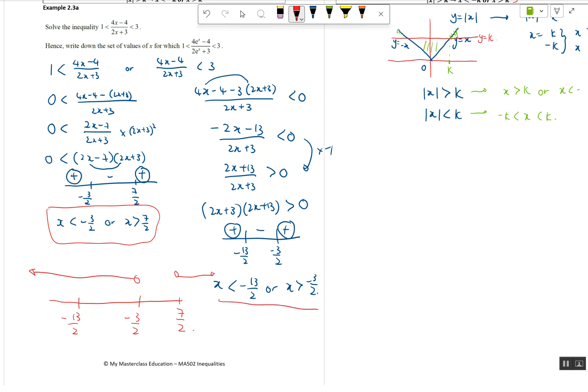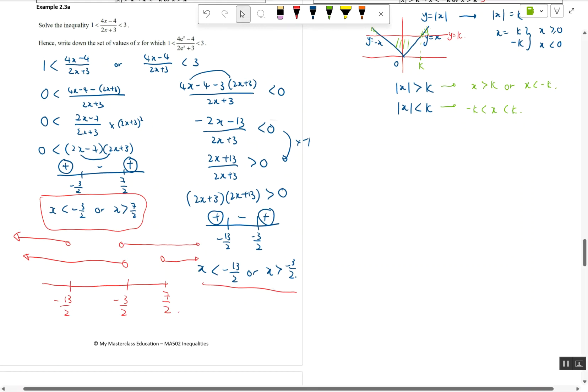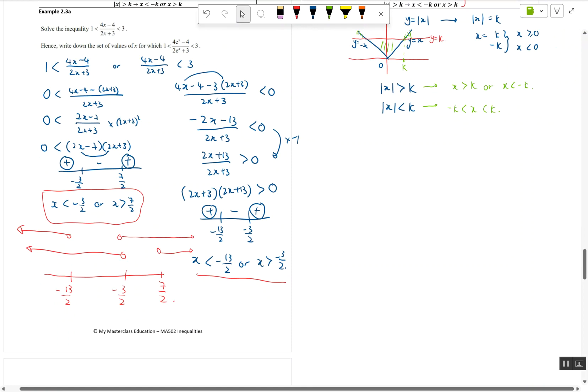Taking the second part, look at the second part, so you have to draw on top of it. Less than negative 13/2 is here, so I can see that my overlapping region is this part, this part. So x is less than negative 13/2, or x greater than 7/2 is my final answer.